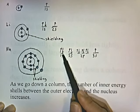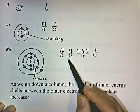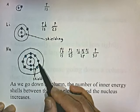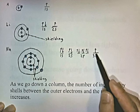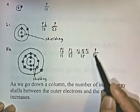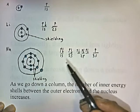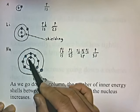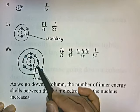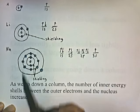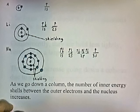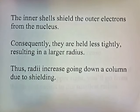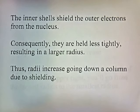Now if we look at sodium, we have two electrons in the first energy level, eight electrons in the second energy level — this ring right here with eight blue dots represents the second energy level — and then one electron in the third energy level, represented by this arrow right here. This electron would like to get close to the nucleus, but there's even more shielding. The second energy level electrons shield the outer electron, and the first energy level electrons add another layer. We have two layers of shielding. So as we go down a column, the number of inner energy shells increases, the inner shells shield the outer electrons from the nucleus, and consequently they're held less tightly, resulting in a larger radius.